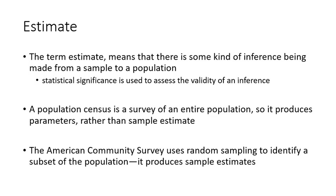One way or the other, we're trying to make a guess about how a population behaves based on data. The term statistical significance is used to assess the validity of an inference as we move from a guess to the actual parameter. A population census surveys an entire population, so it produces parameters — not estimates — because you have the entire population mapped out. The American Community Survey, conducted by the US Census, uses random sampling to identify a subset of the population, so it does produce sample estimates and relies upon inferential statistics.